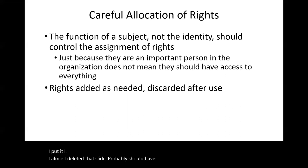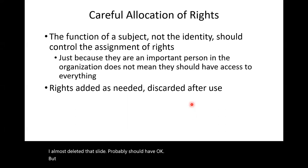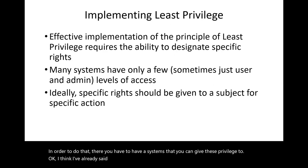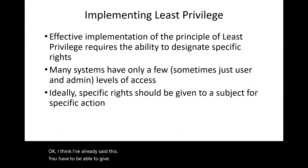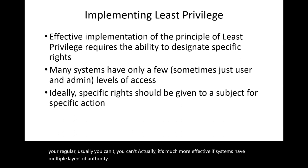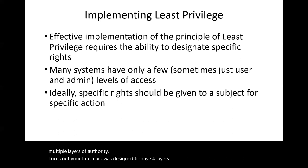To implement least privilege, you need systems that support fine-grained privilege. Some systems are binary — either you're root and can do anything, or you're a regular user. It's much more effective if systems have multiple layers of authority. Your Intel chip was actually designed to have four layers of authority; Windows uses only two of them — you either have it or you don't.